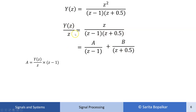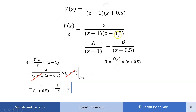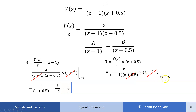Finding A: multiply Y(z)/z by (z-1) and evaluate at z=1. The (z-1) cancels, giving A = 1/1.5 = 2/3. Finding B: multiply Y(z)/z by (z+0.5) and evaluate at z = -0.5. The (z+0.5) cancels, giving B = 1/3.